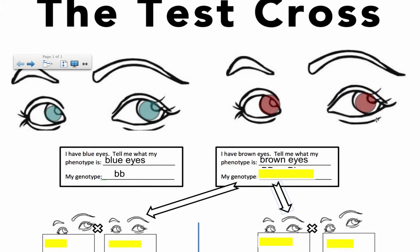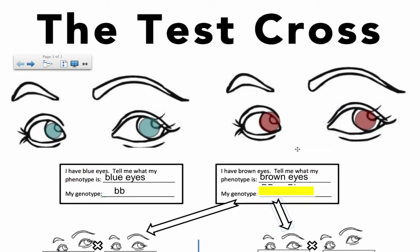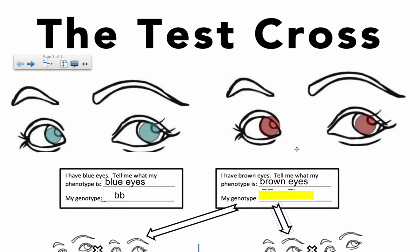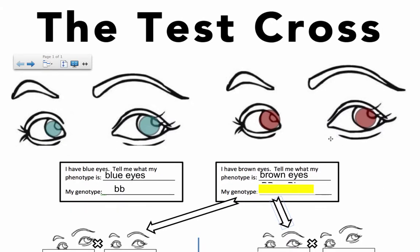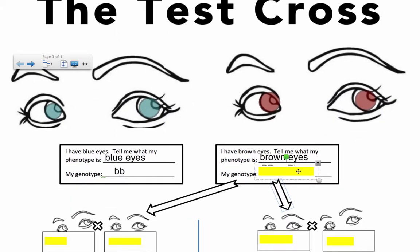But when I have brown eyes, unless I know some information about my parents or my kids, then it's harder to tell. The test cross helps me figure out exactly what type of brown-eyed person I am, because I could be big B big B, or I could be big B little b. In an ideal world you would make this person with an unknown genotype have babies with someone who has a known genotype - if they have blue eyes then they must be little b little b.